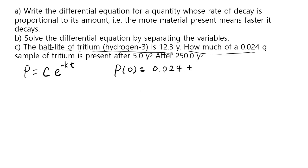And that means if I plug in 0 into t, I get 0.024 should equal to c times e to the negative k times 0, giving us that 0.024 is actually the value of c because e to the 0th power is 1. So we figured out what c is, we still need to figure out what k is.